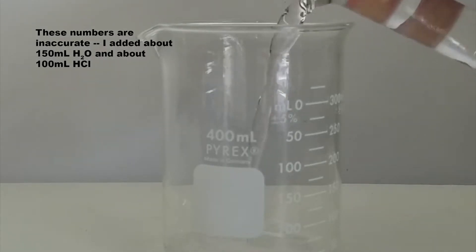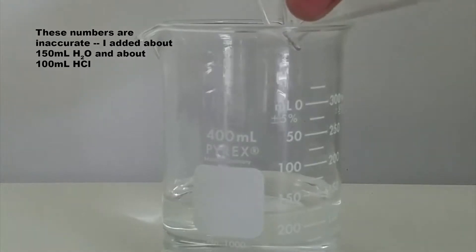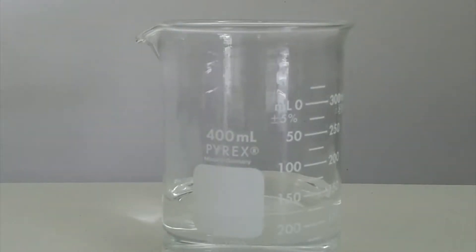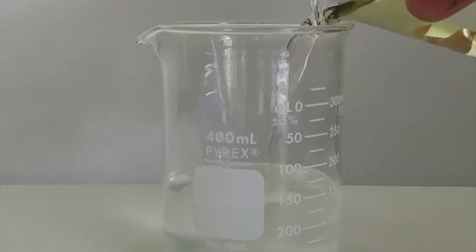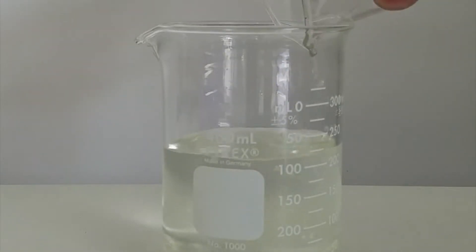To start, I added about 250 milliliters of distilled water and about 200 milliliters of hydrochloric acid to partially dilute it. Hydrochloric acid is usually clear, but in my case it was yellow, either because of impurities or some other dissolved solute.